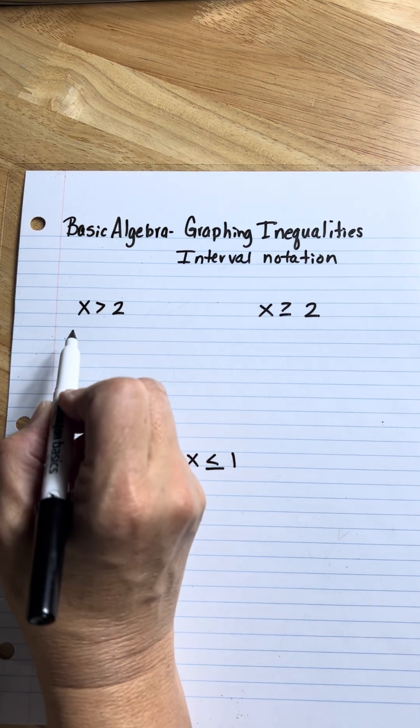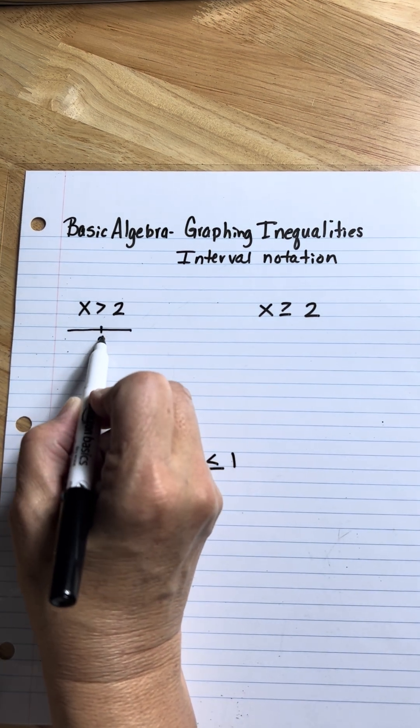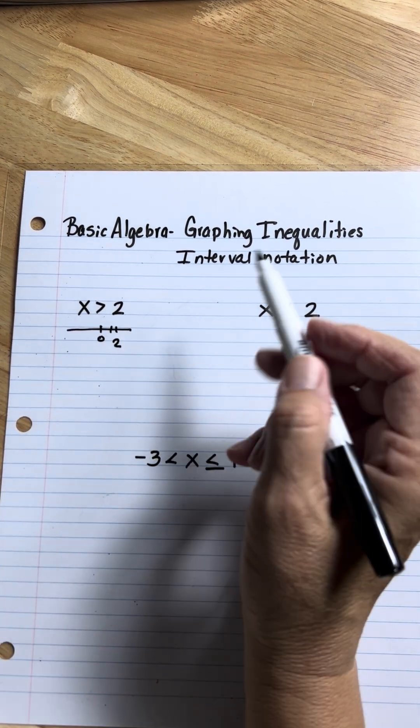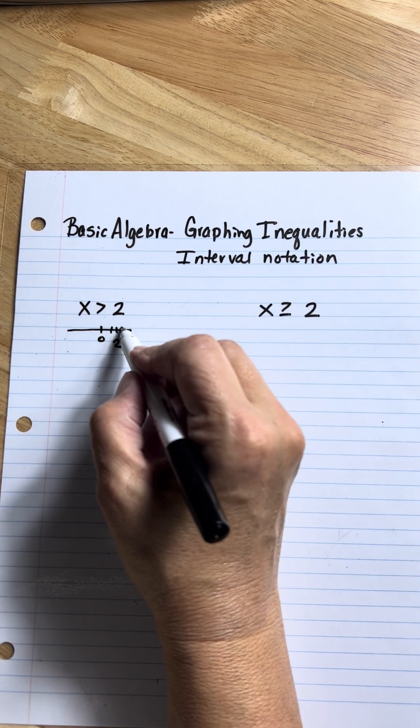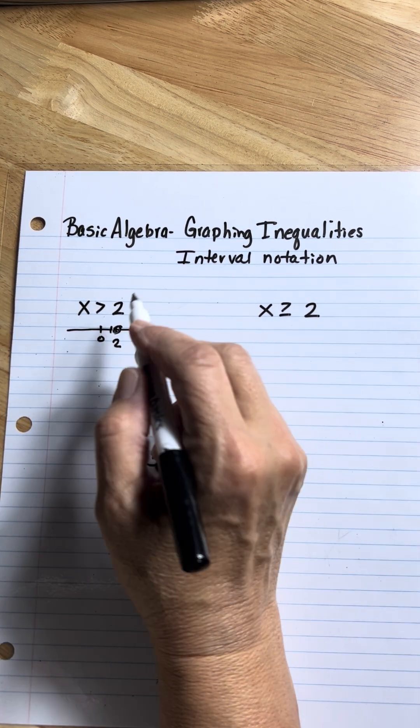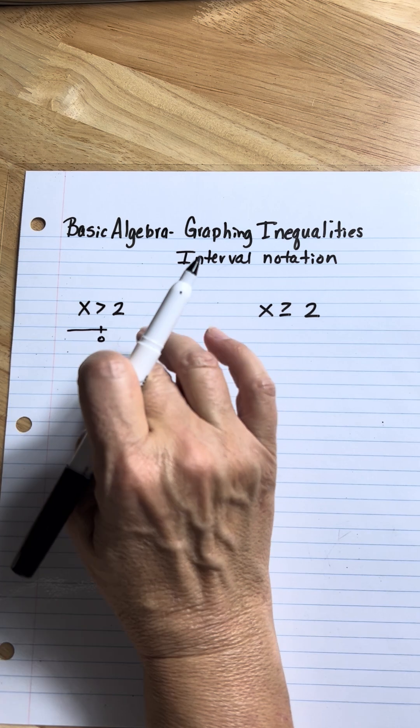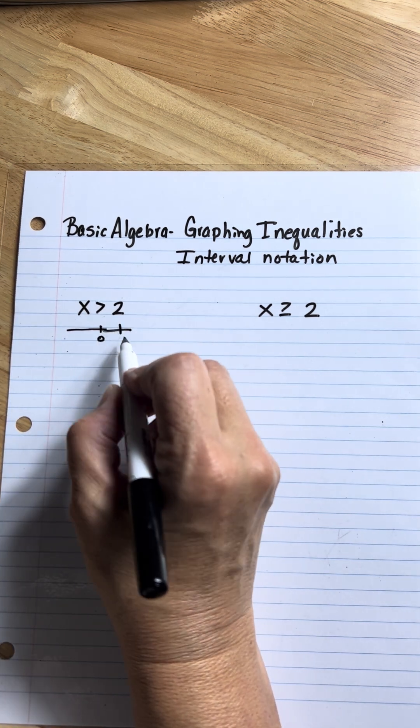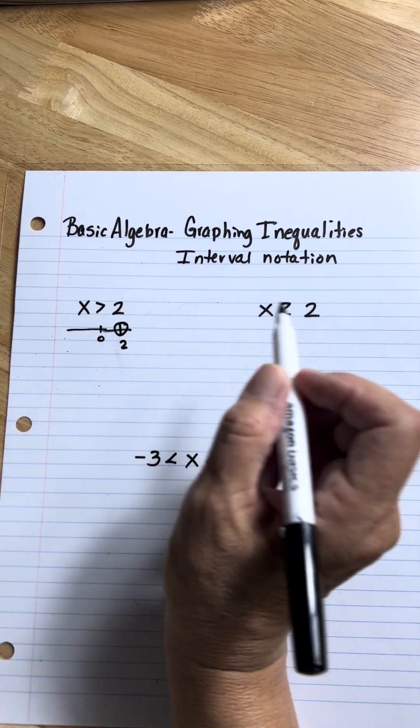So starting with this one, let's draw a little number line. Doesn't have to be exact. Here's the number two. Since it's just greater than, it's going to be an open dot around the two. And you can't really tell that's open, so let me try again. All right, if we go to two, it's going to be an open dot.